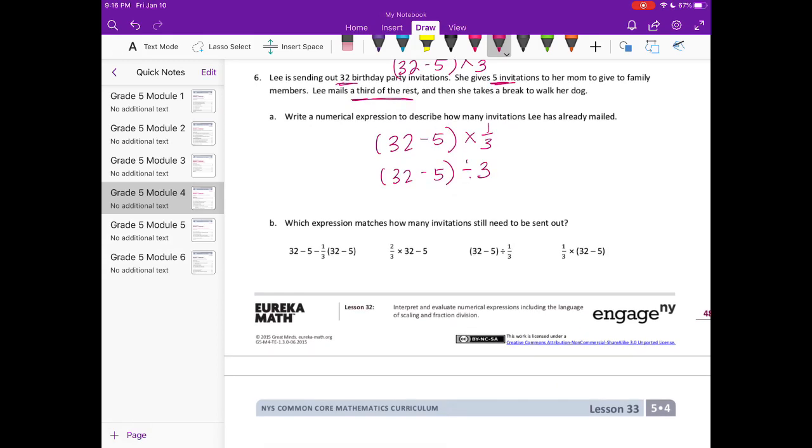Which expression matches how many invitations still need to be sent out? So if we want to know how many still need to be sent out, I'm going to take how many she gave to her mom. So that was 32 minus 5. And then we're also going to take out what she already used. So this portion. 32 minus 5 times one third. So let's look for something that looks similar to that. And this first one matches that one. It's in a different order. But that's okay. So when there's a fraction or a number right next to the parentheses, that means times.